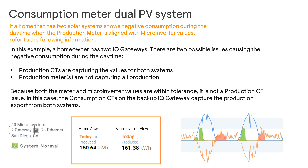Take a look at this example. Microinverters measure production values at a 95% accuracy rate, while production CTs measure production at a 99% accuracy rate. When comparing the two, the difference should not exceed 4.5%. Here you can see the meter and microinverter values are within this range, so this is not a production CT issue.